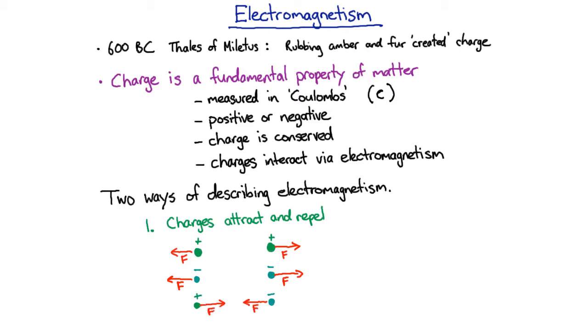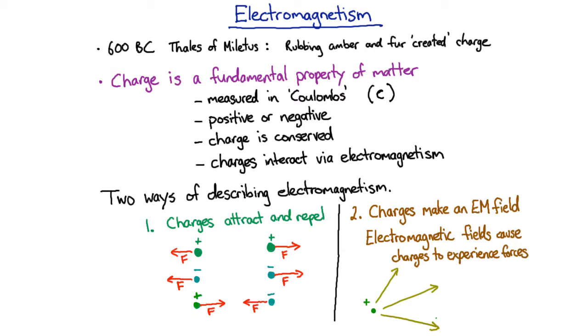And the second model is that charges make an electromagnetic field. And then electromagnetic fields cause charges to feel forces. So, you can basically see that these two models are equivalent. In both cases, you have a force on one charge due to another charge. Except in this second model, you've got a charge making a field, and then the field making a force. And so, you've just got this extra step.